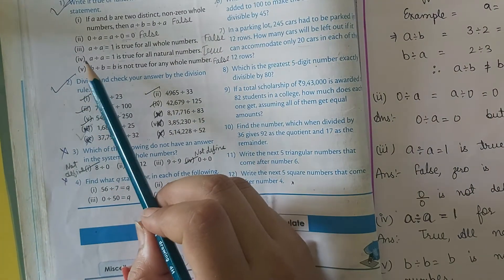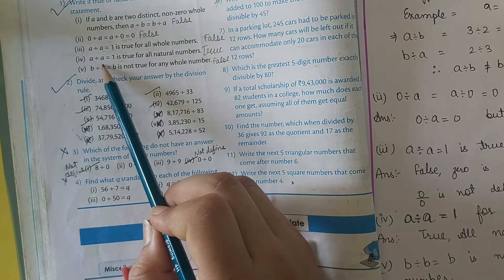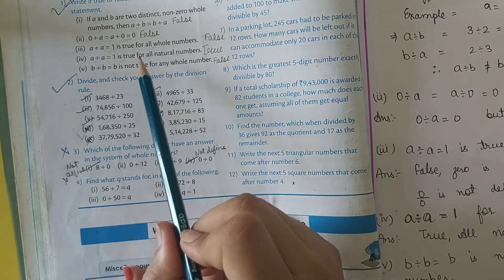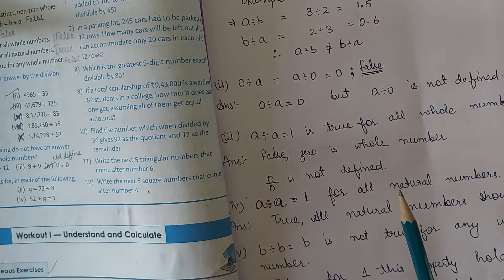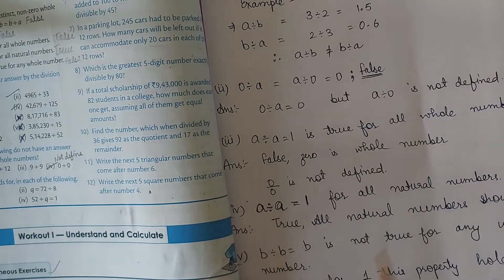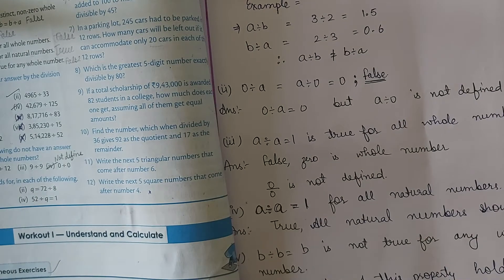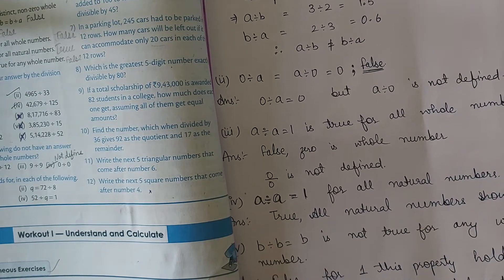Moving to the next statement: A divided by A equals 1 is true for all natural numbers. Yes, this statement is true. A divided by A is always true for all natural numbers.